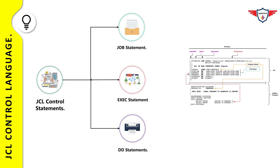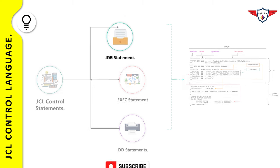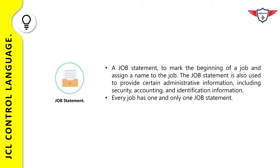Now let's discuss each job control statement one by one. The first is the job card. A job statement is the first statement of any JCL — it marks the beginning of a job and assigns a name to it. The job statement provides certain administrative information including security, accounting, and identification information. A JCL can have one and only one job card; you cannot have more than one job card in a single JCL.